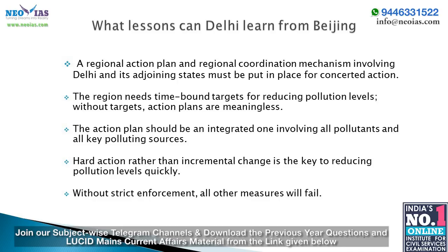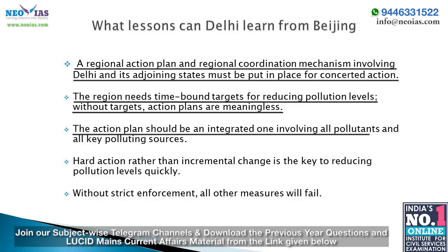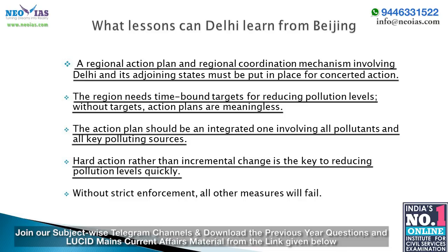What lessons can Delhi learn from Beijing? A regional action plan and regional coordination mechanism involving Delhi and adjoining states must be put in place for concerted action. The region needs time-bound targets for reducing pollution levels, because without targets, action plans are meaningless. The action plan should be integrated, involving all pollutants and all key polluting sources. Hard action rather than incremental change is the key to reducing pollution levels quickly, and without strict enforcement, all other measures will fail.